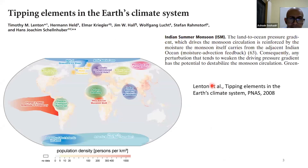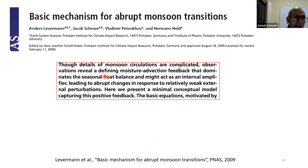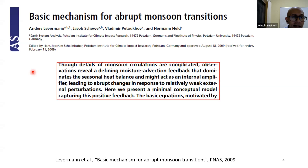Shortly thereafter, the Indian summer monsoon was included among the tipping elements of the earth system. A key quote: the land-to-ocean pressure gradient which drives the monsoon circulation is reinforced by the moisture the monsoon itself carries from the adjacent Indian Ocean, and consequently any perturbation that tends to weaken the driving pressure gradient has the potential to destabilize the monsoon circulation. A later paper introduced a simple single ordinary differential equation model for this tipping element, centered on a moisture advection feedback that dominates the seasonal heat balance and might act as an internal amplifier leading to abrupt changes in response to relatively weak external perturbations.